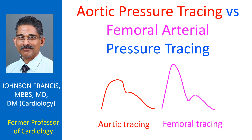Aortic pressure tracing vs. femoral arterial pressure tracing: the upstroke and downstroke are sharper in a peripheral arterial pressure tracing compared to the central aortic pressure tracing. Amplitude is higher in a peripheral tracing due to amplification of the pressure wave. The dicrotic notch in the peripheral arterial tracing will be lower compared to the incisura of the aortic pressure tracing.